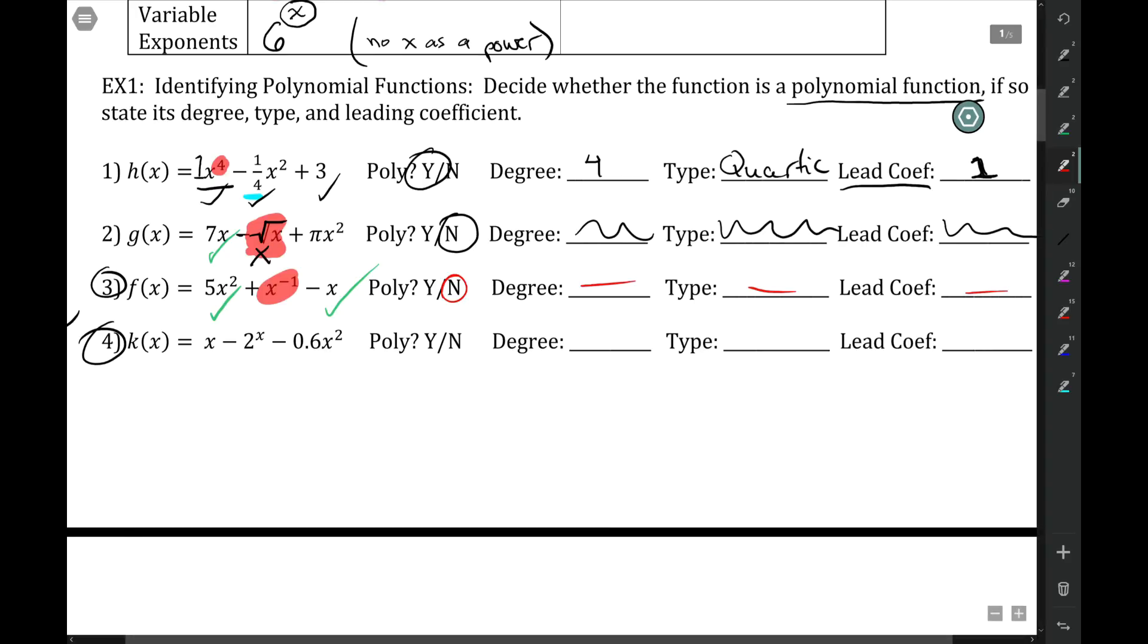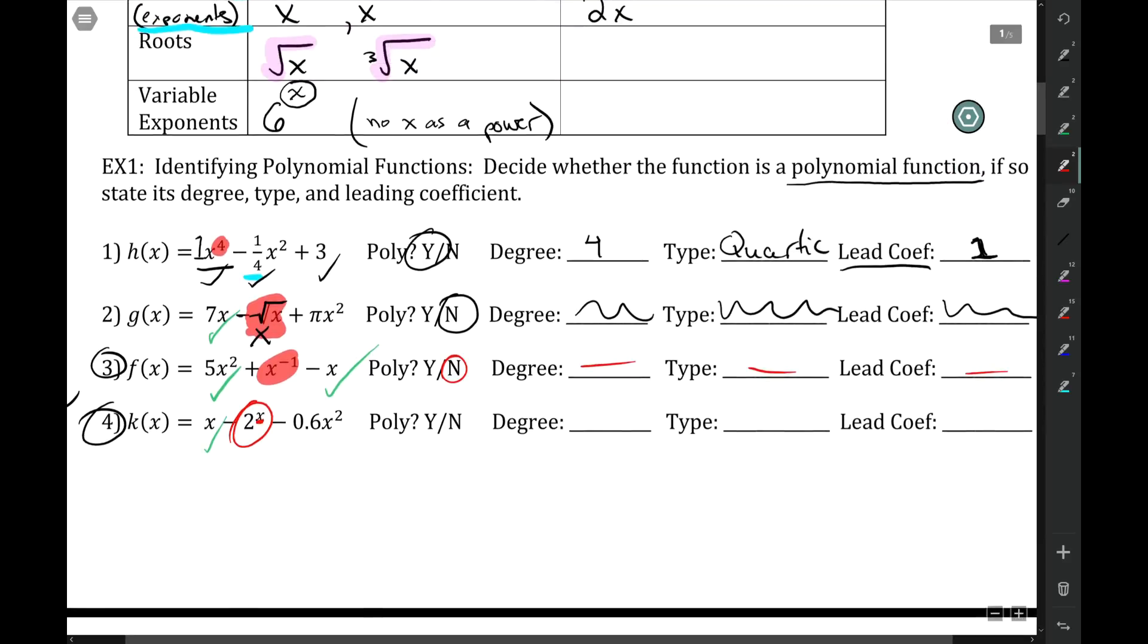Number four might be tricky in some reasons here. So I look at the first number, and it's just an x. That's okay. Two to the x. Okay, just this negative two to the x. x is an exponent. You can't have variable exponents, so it's not polynomial.